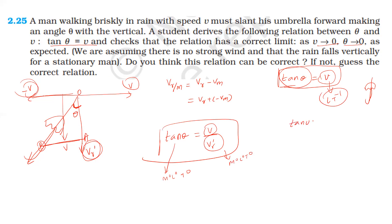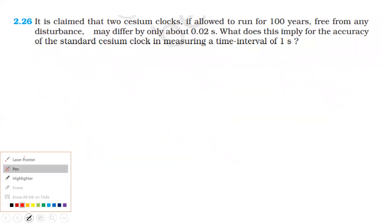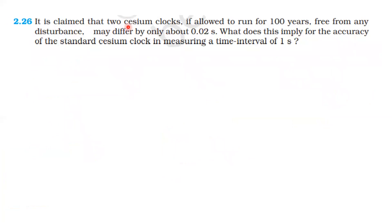So the correct relation is tan theta equals velocity of man divided by velocity of rain. Next: It is claimed that two cesium (CCM) clocks, if allowed to run for 100 years free from any disturbance, may differ by only about 0.02 seconds. What does this imply for the accuracy of the standard cesium clock in measuring a time interval of one second?